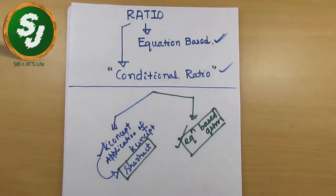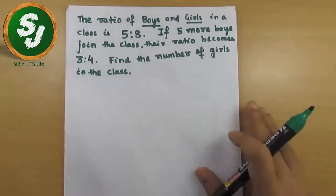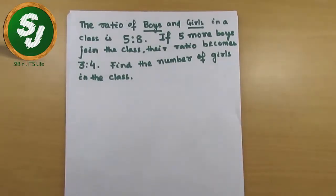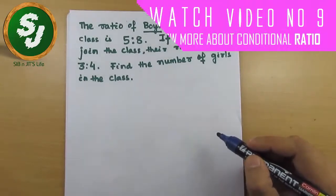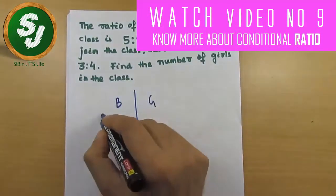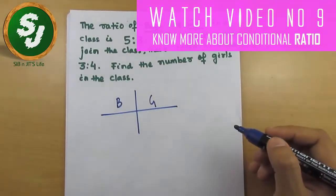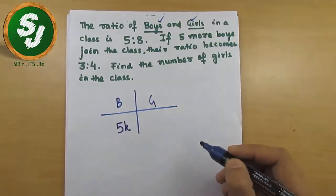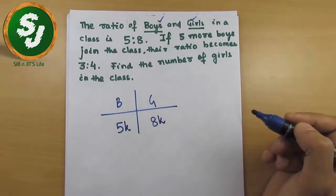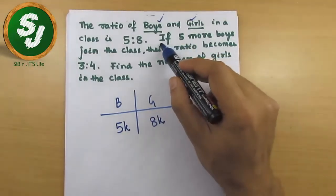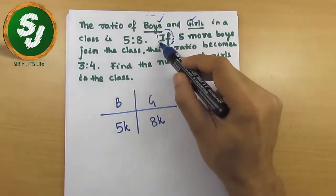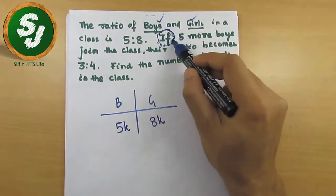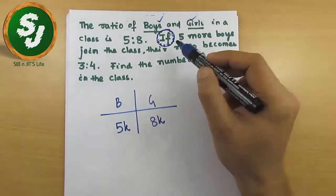Let me explain with an example. There is a classroom with a certain number of boys and girls, and the ratio of boys to girls in the class is 5 is to 8. The word 'if' in the question tells you indirectly that it is a conditional ratio equation, because it sets up a condition.